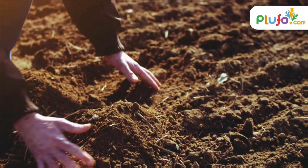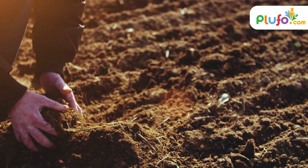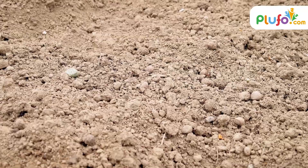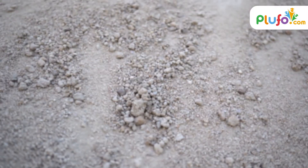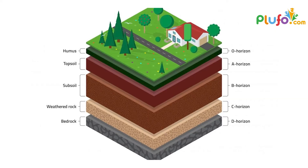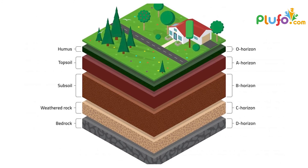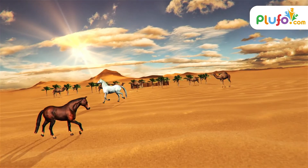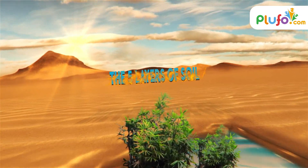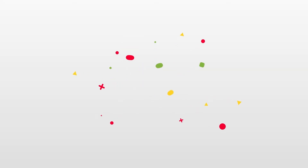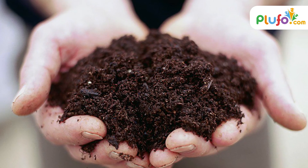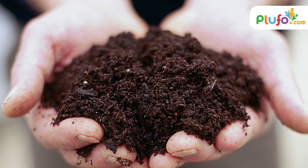The lush green layer that we see on the ground has various layers of soil beneath it. These layers of soil vary for different types of soil, but usually all soil types consist of 5 common layers. These different layers are also referred to as horizons. Let's learn about these 5 horizons one layer at a time.